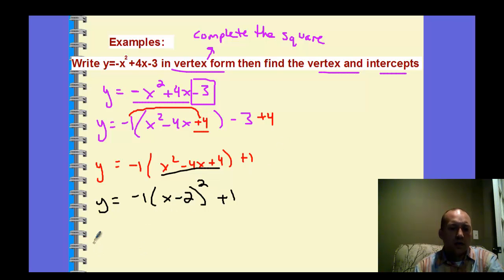So the nice thing is now we know the vertex. It's the horizontal shift and the vertical shift. So the vertex is going to be our h, k. There's a vertex. 2, 1.